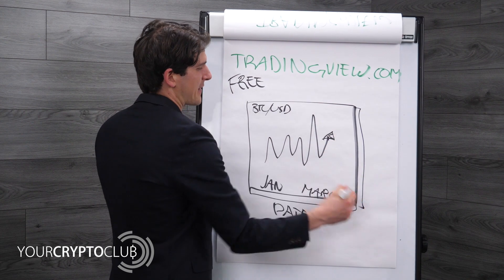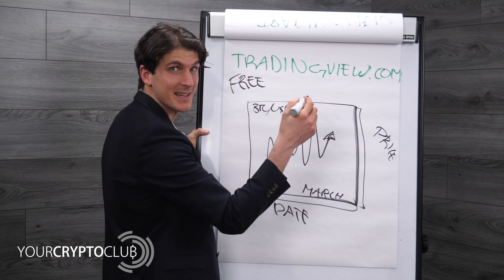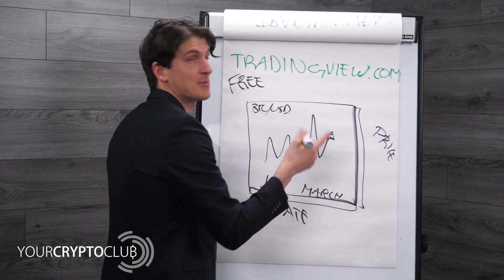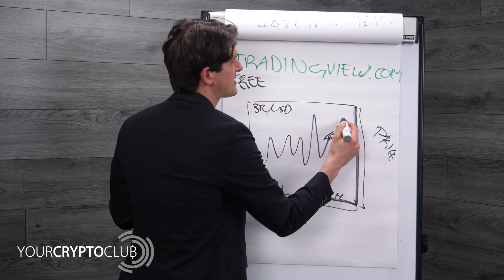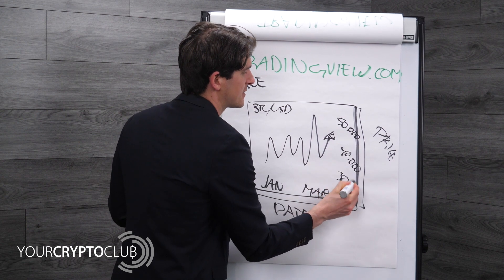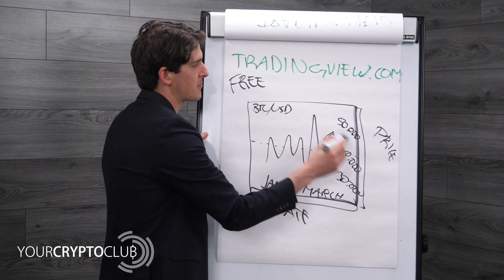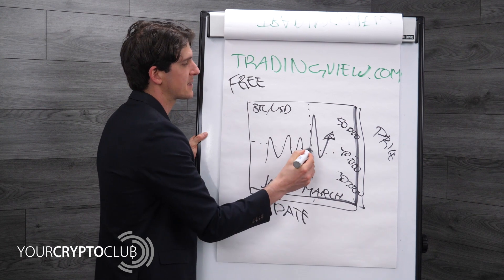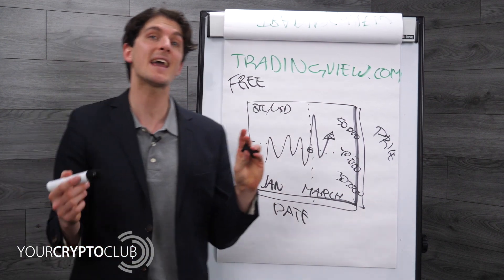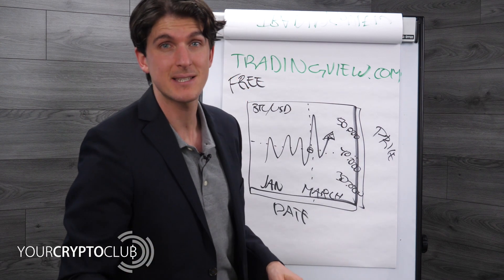Here you have the price. Depending on when you're watching this, Bitcoin might be at a million, a hundred thousand, or maybe sixty thousand — it was around fifty thousand when I recorded this video. So here it's fifty thousand, here it's forty thousand, then thirty thousand. It shows you the price, and wherever you hold your mouse on the chart, it will show you the price on a specific date.